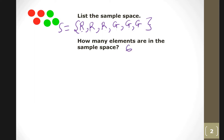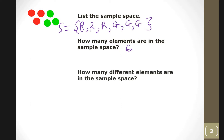Now, how many different elements are in the sample space? You only have red and green, so there are only two different elements in this sample space. That's how you list the sample space, find how many elements are there, and identify the distinct elements.